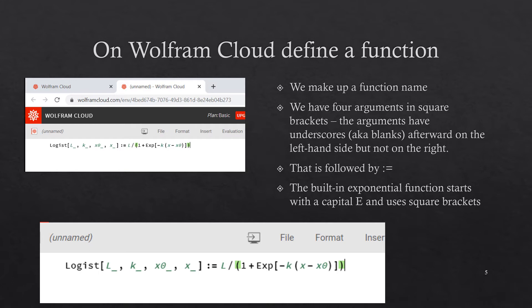So it's the name of the function logist, square bracket, our arguments with blanks, close that square bracket, then a colon equal. Mathematica makes a distinction between equal, colon equal, and equal equal. When defining the function we want the colon equal. And then on the right-hand side we define our function.